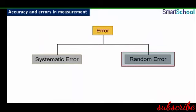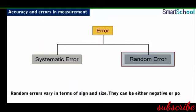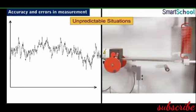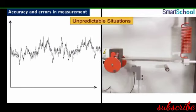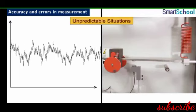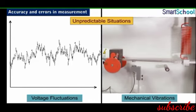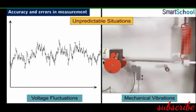Random errors vary in terms of sign and size, that is, they can be either negative or positive, and the quantum of error varies in absolute terms. These errors can arise out of unpredictable situations such as a sudden change in environmental conditions, voltage fluctuations, or mechanical vibrations in the experimental setup. Random errors can be minimized or eliminated by ensuring that measurements are taken under stable conditions and using properly set up instruments.